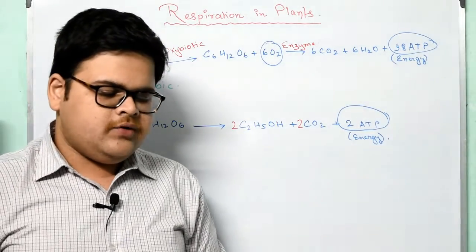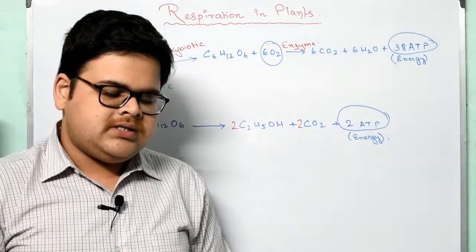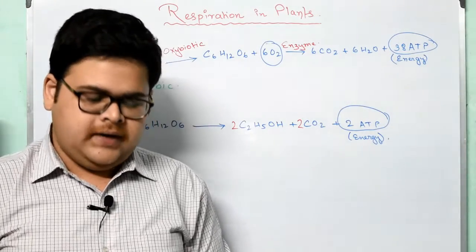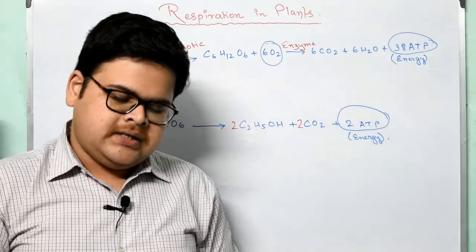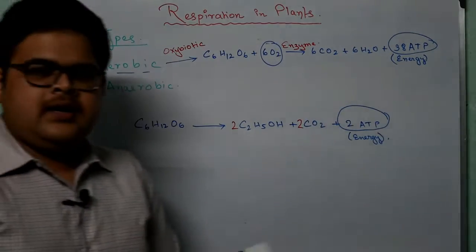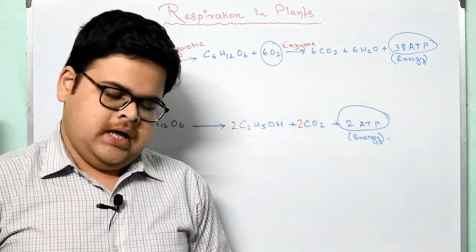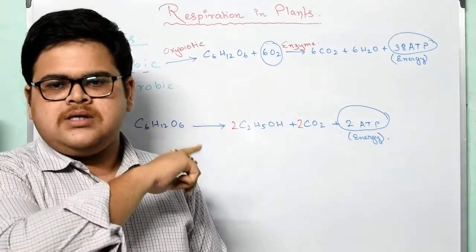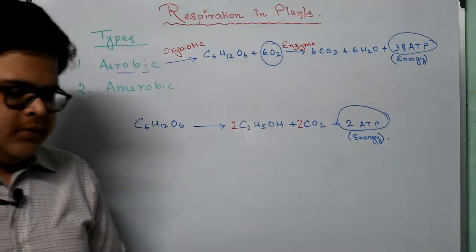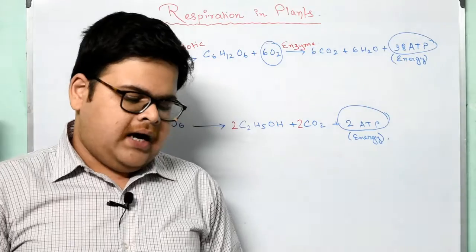Sometimes certain parts of a plant, including fruits and seeds, may temporarily respire even in the absence of oxygen. In this type of respiration, the glucose molecule is incompletely broken down into ethanol or ethyl alcohol and carbon dioxide, with the release of a small quantity of energy. This type of respiration is called anaerobic or anoxybiotic respiration, as opposed to oxybiotic respiration. Anaerobic respiration in any part of the plant cannot continue for more than a few days, and that part ultimately dies.